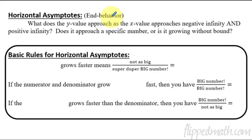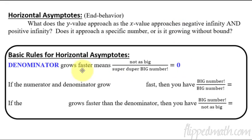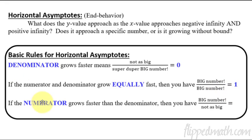Basic rules. If you have a denominator that is growing faster, you have a situation where the number on bottom is really, really big, so if you divide by extremely large numbers on bottom, you're going to basically get zero. If the numerator and denominator grow at the exact same rate, they cancel each other out and you get the ratio of their coefficients. And if the numerator grows faster than the denominator, you're approaching infinity — there is no horizontal asymptote.